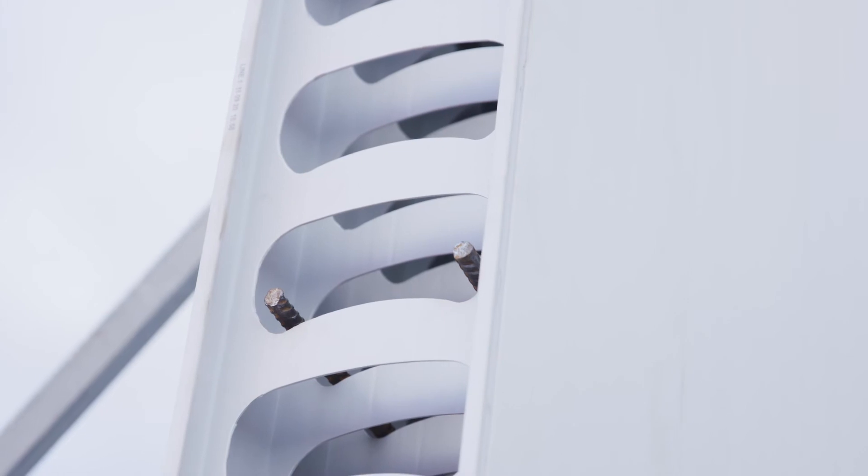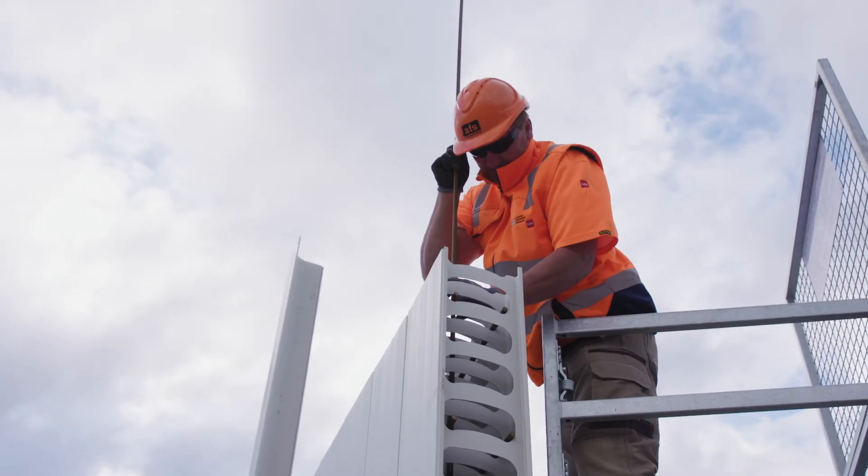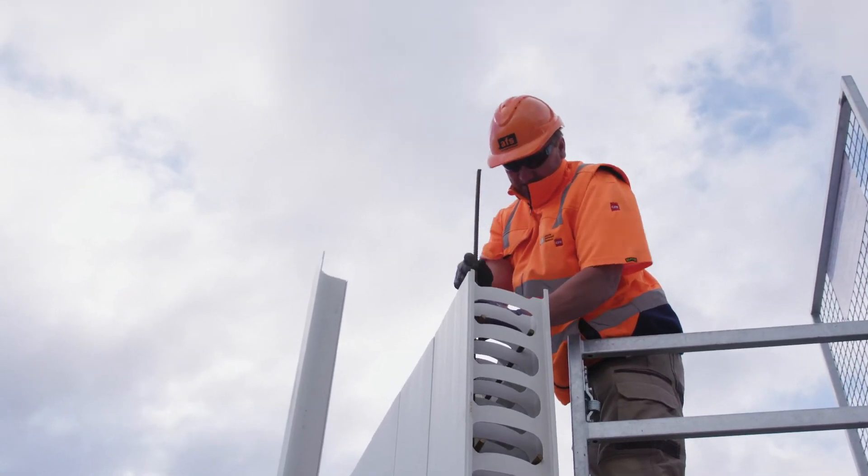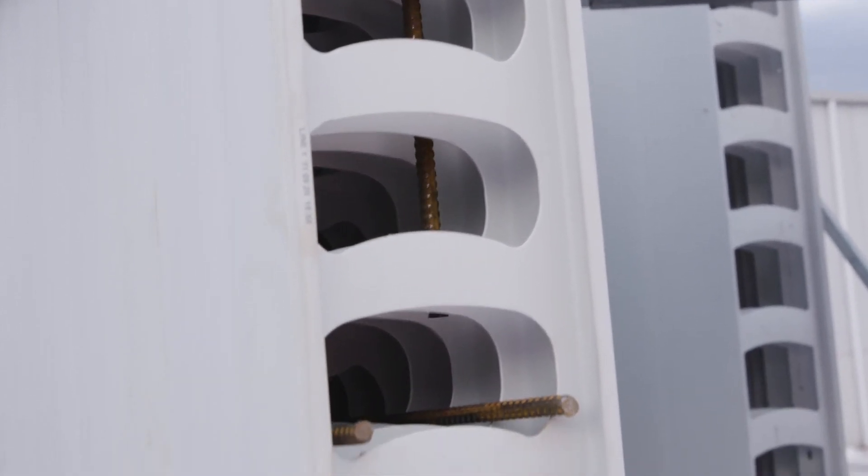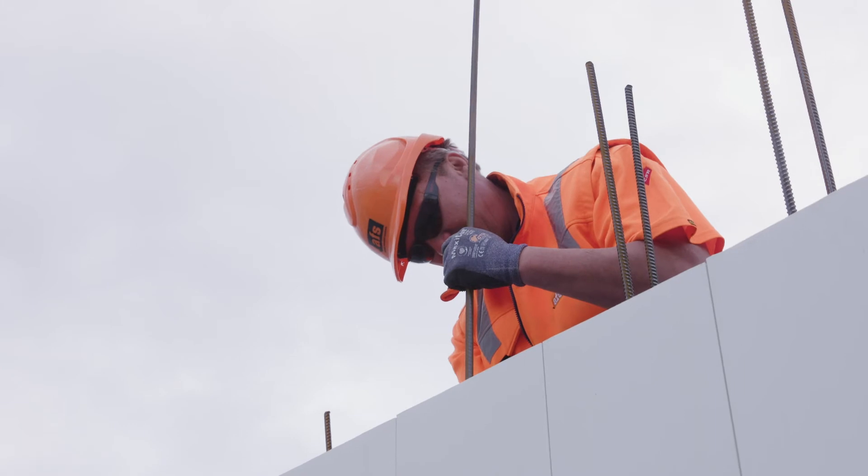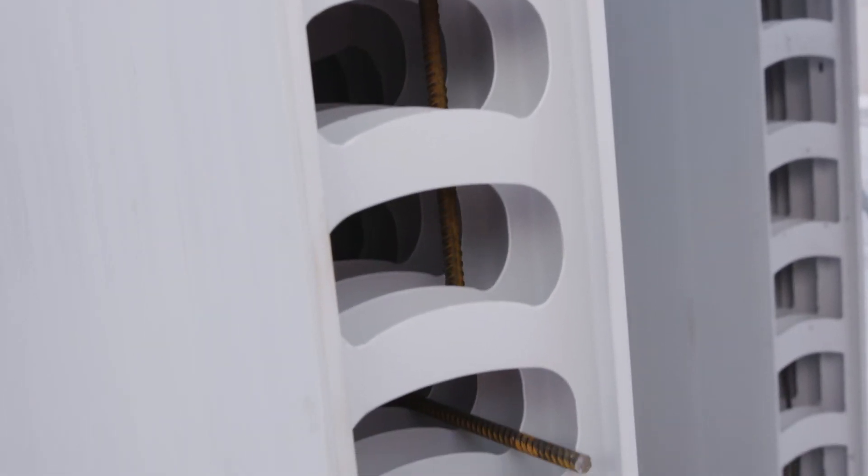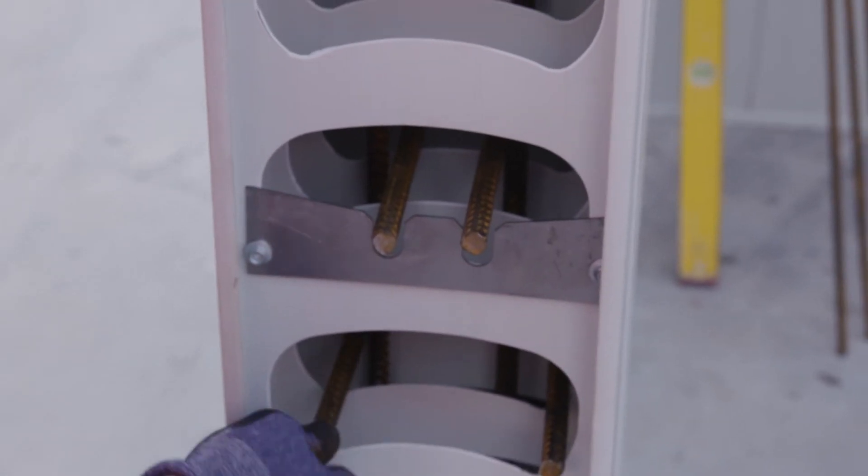The vertical reinforcement bars are then lowered into the ready wall panel at the correct spacing and lap with the starter bars at the bottom of the panel. It is important to ensure that the vertical bars are installed on the internal side of the horizontal bars and on the outer side of the alignment bars.